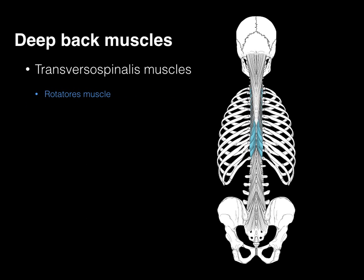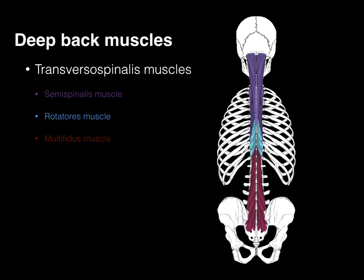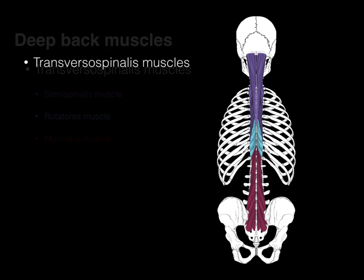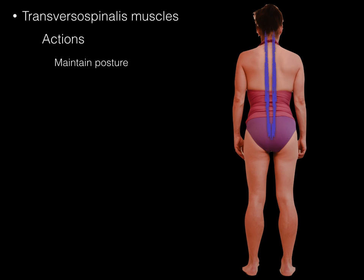The rotatores muscles arise from the transverse process and span one to two vertebrae to attach to a superadjacent spinous process, and they're primarily located in the thoracic region. The multifidus has multiple attachments, arising from the sacrum and transverse processes and spanning two to four vertebral lengths to a superadjacent spinous process — more primarily located in the lower back. The primary action of the transversospinalis group is maintaining posture alongside the erector spinae, and they also contain proprioception fibers to sense where the vertebral column is in space.